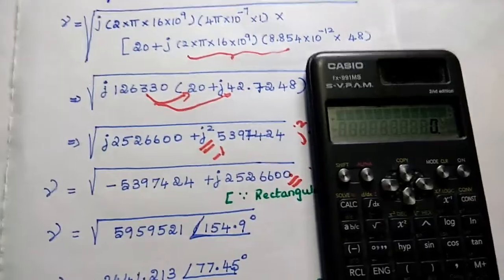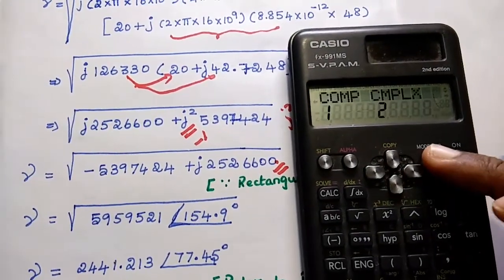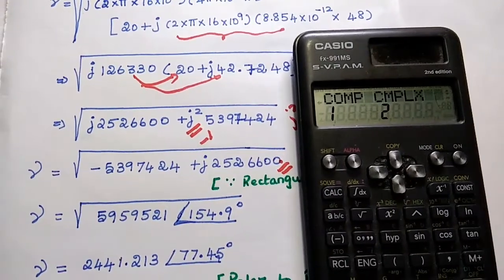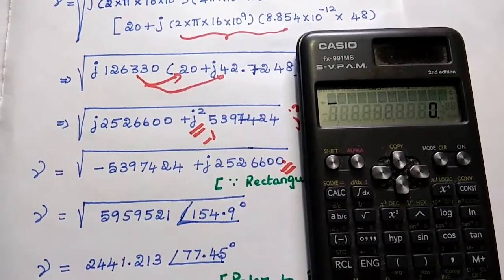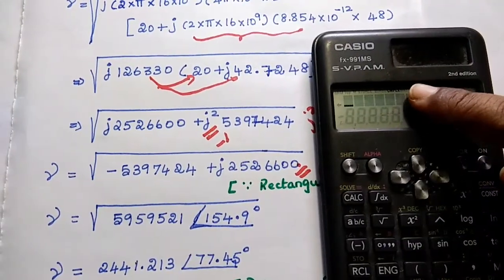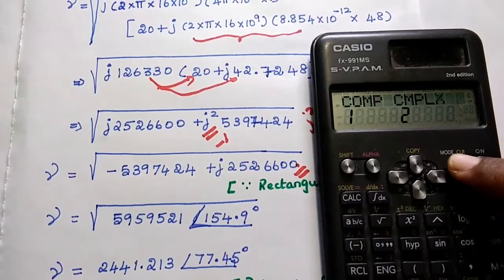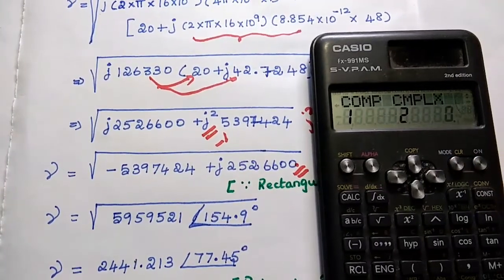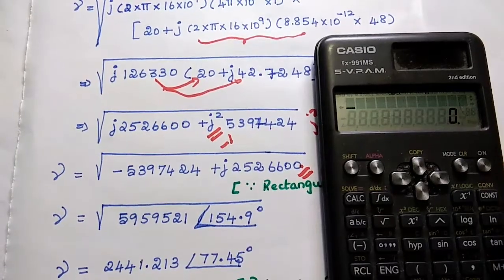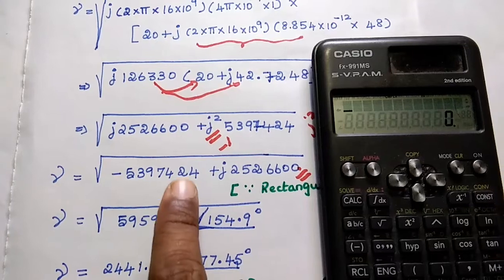Using the calculator, the first step is to select the mode. Press mode and select 2. Simply press 2. You can see the mode is changed to cmplx. After selecting the complex mode, we are going to type the complex value as it is.